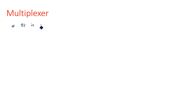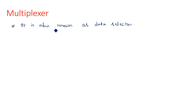In this video we are going to learn about the multiplexer, which is also known as a data selector. At the input of a multiplexer we have 2^n number of inputs. Out of these 2^n inputs, the multiplexer will select only one input and send it to the output. That is why it is known as a data selector.